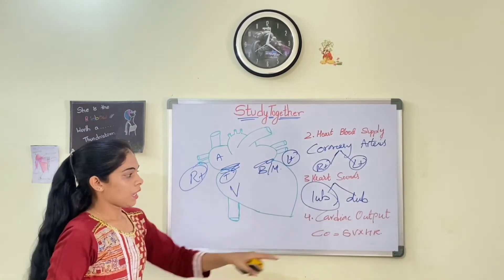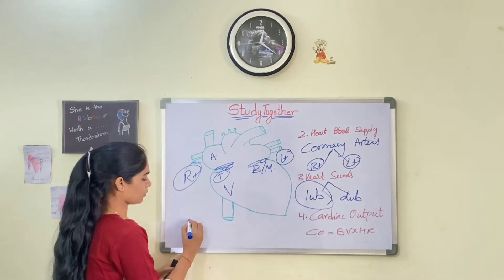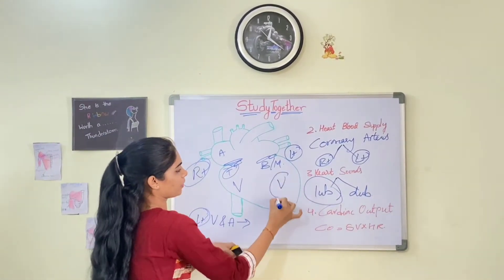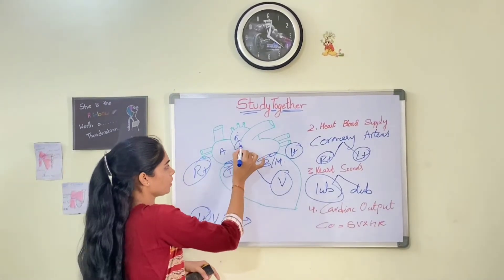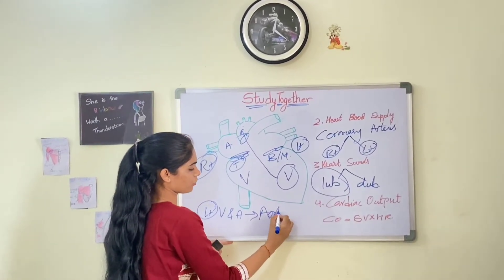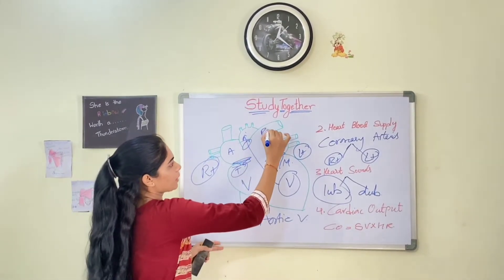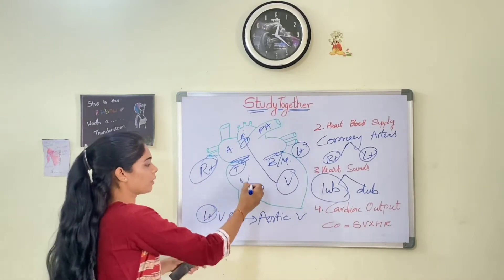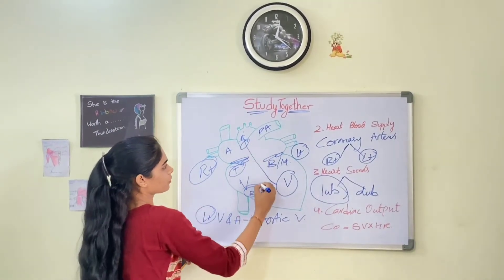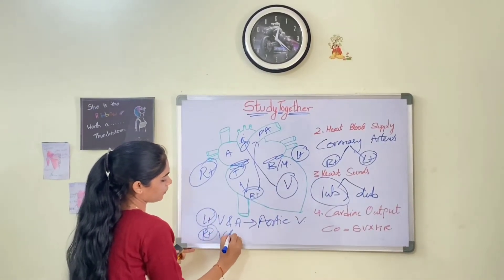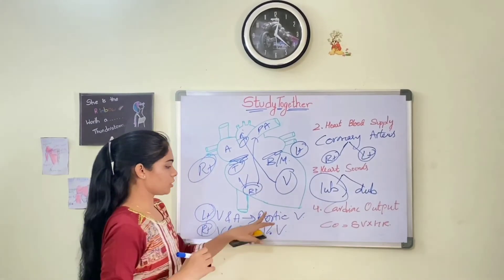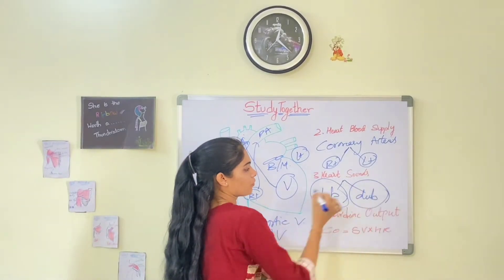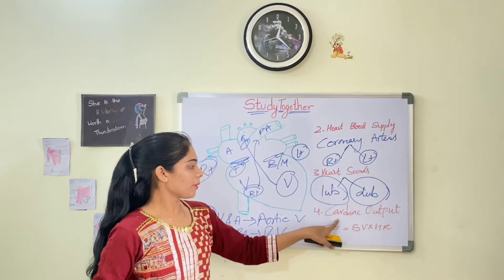Now coming to the sound dubb. In addition to the tricuspid and bicuspid valves, two more valves are present. There is an aortic valve between the left ventricle and aorta, and a pulmonary valve between the right ventricle and pulmonary artery — as the right ventricle sends deoxygenated blood to the pulmonary artery toward the lungs. When these two valves are closed, the second heart sound — dubb — is produced.